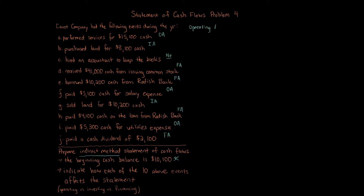For operating activities, because we're not presented with net income or net loss, we have to go through our revenues and expenses. We're looking for anything marked OA — operating activities. We have A, F, and I — three transactions — and they're all revenues and expenses. No current asset or current liability changes, no depreciation expense, no gains or losses. Those things all go on operating activities, just revenues and expenses.